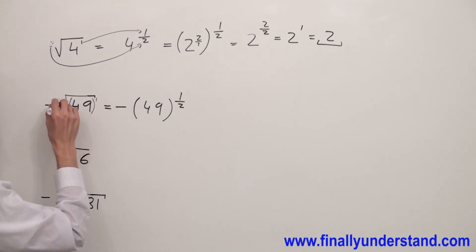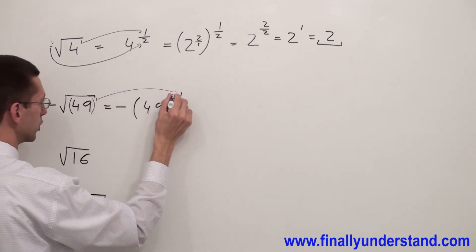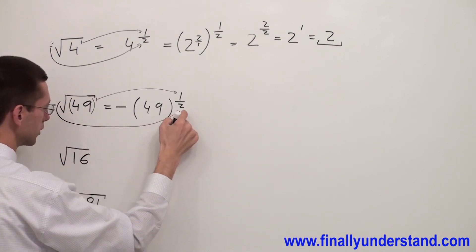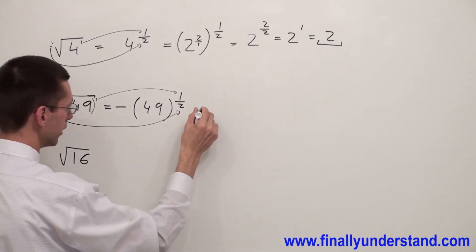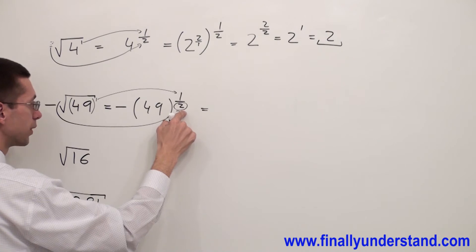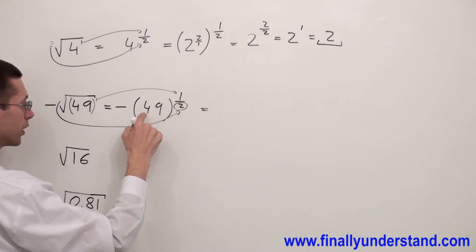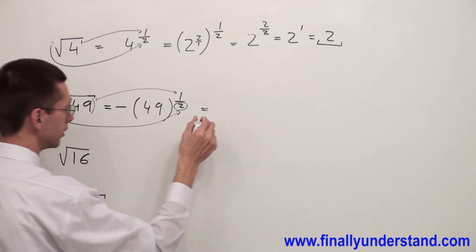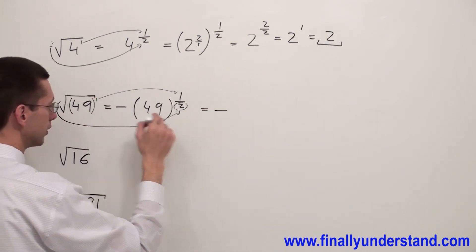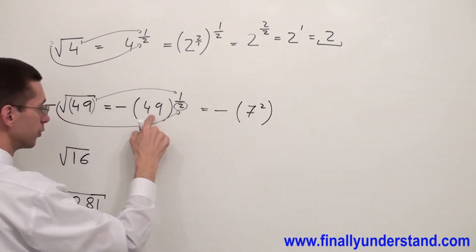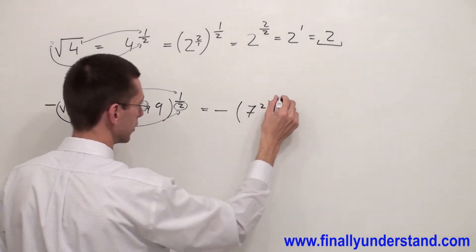Anytime I have no index, there is always an invisible 2. The exponent goes always to the numerator, and the index — my invisible 2 — becomes visible and goes to the denominator. Next, I have to look at the denominator. I have 2. I ask myself: what number raised to the second power is going to give me 49? 7 raised to the second power is going to give me 49. I copy down the exponent.